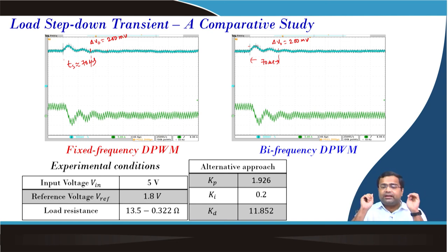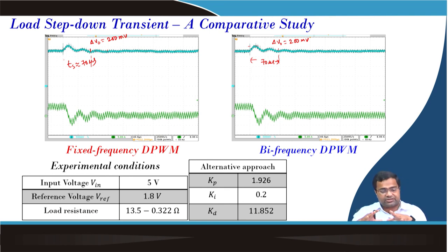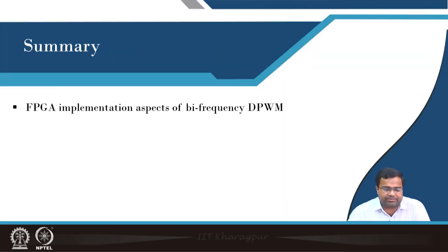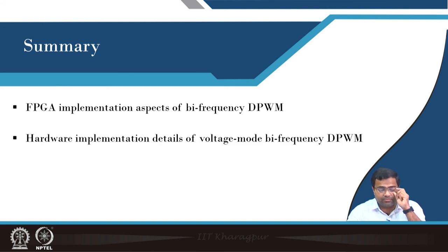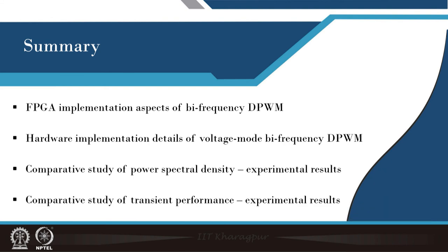In conclusion, if the bi-frequency technique is implemented properly, there is insignificant impact on transient performance, which is very important. At the same time, it achieves considerable spectral peak reduction by spreading the spectrum. In summary, we discussed the FPGA implementation aspect of bi-frequency DPWM, showed the hardware implementation details, made a comparative study of power spectral density, and demonstrated that the impact on transient performance is insignificant while achieving considerable reduction in spectral peaks. Thank you very much.